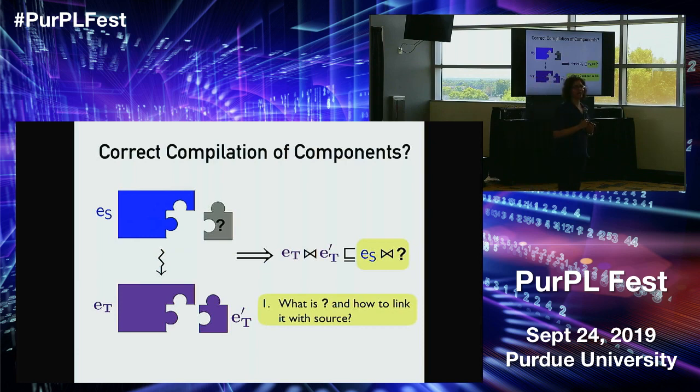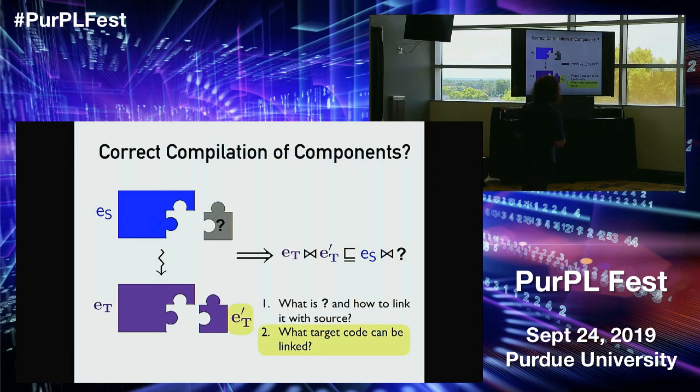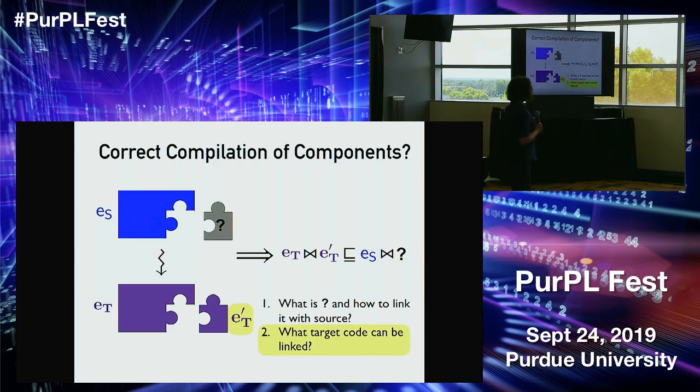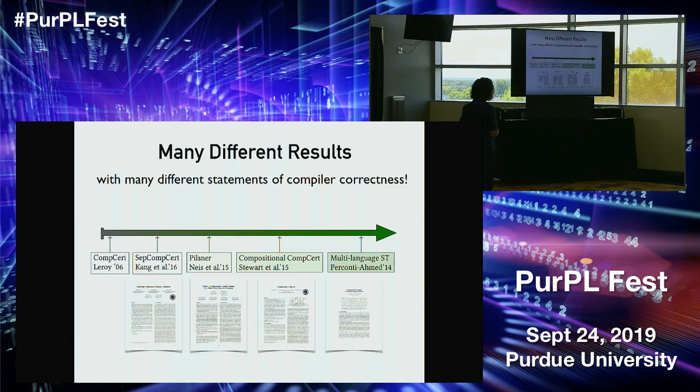Using the bowtie symbol for linking: we want ET ⋈ ET′ to refine the behavior of something on the source side — ES ⋈ [?] — and the whole question is how we define what that question-mark component is and its relationship to ET′. If that box is ET′ itself, we have an issue: we'd have to link a source component with a target component, which isn't a thing that exists. The second main question is what target code we allow our compiled code ET to be linked with.